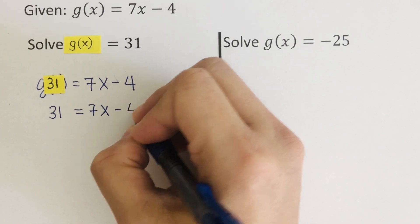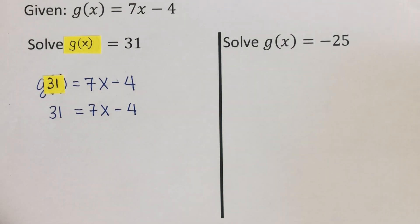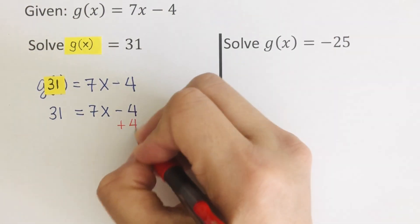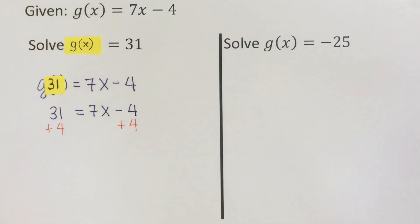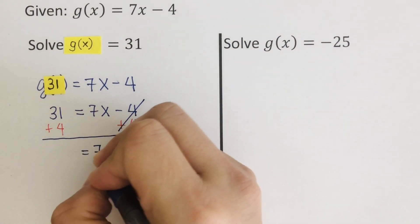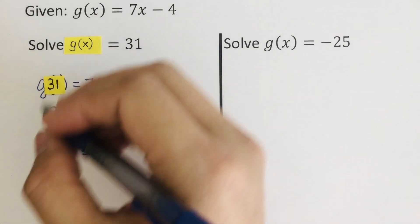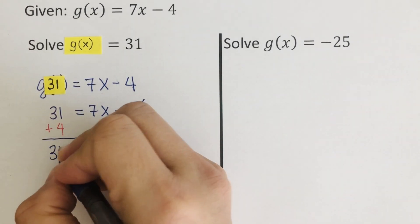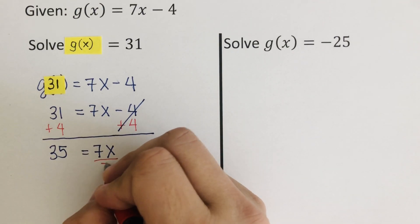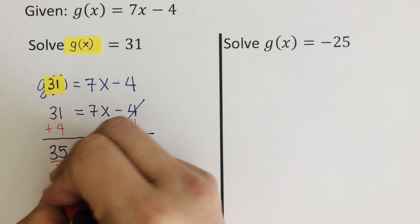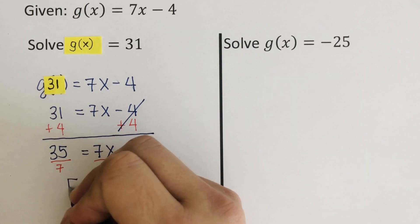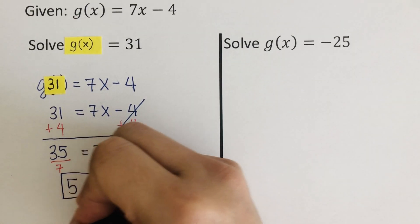So we add 4 to both sides: 31 + 4 = 7x, which gives us 7x = 35. Dividing both sides by 7, our x = 5.